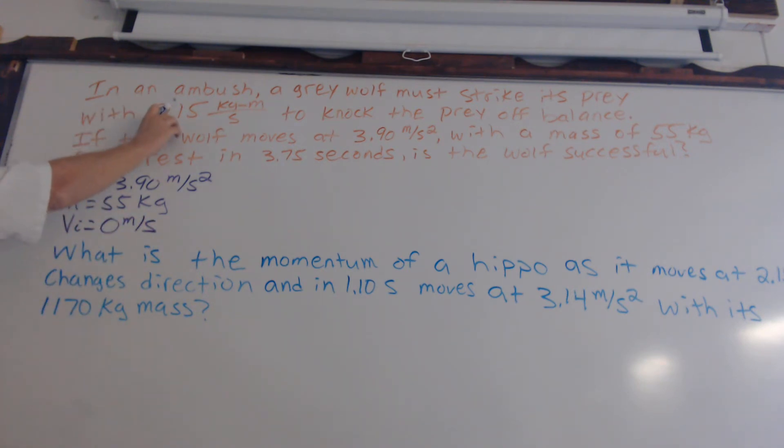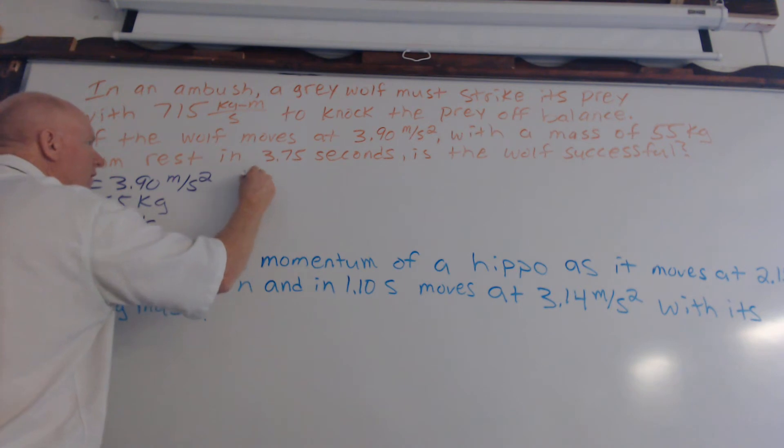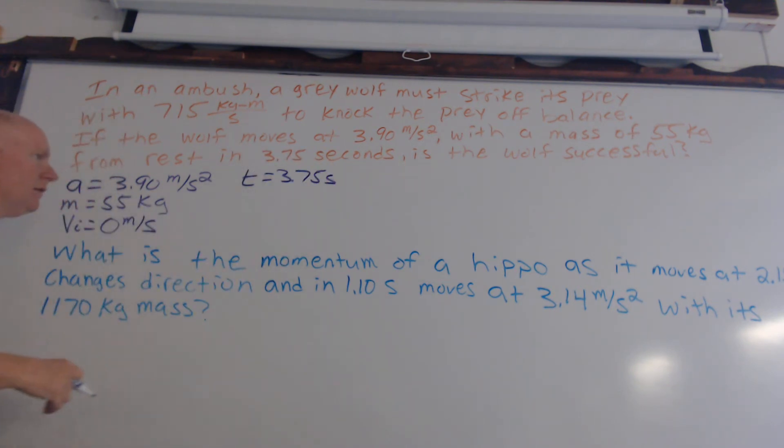Okay, remember we need to see if it has this much of a momentum. And then finally, well, what two things do we need to know to solve for momentum? And that is mass and velocity. We've got the mass, but we don't have this velocity, but we've got one more variable, which is time, 3.75 seconds.